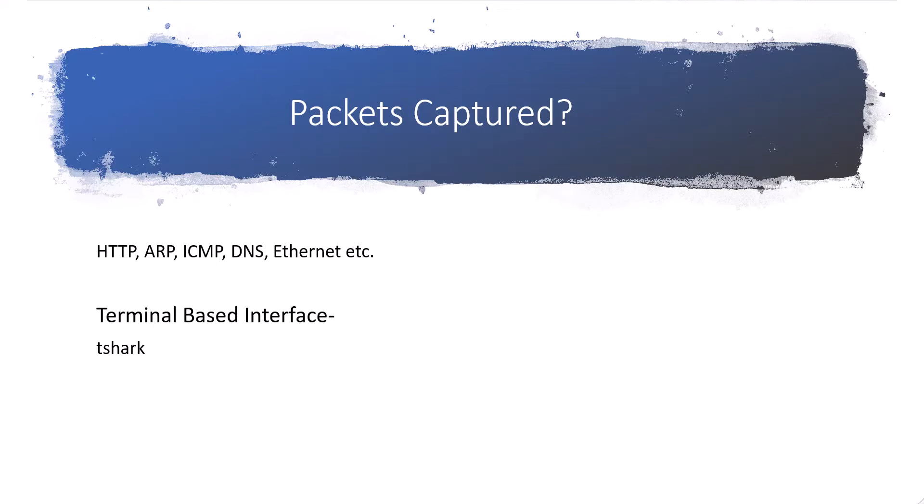So what kind of packets are transmitted in the network? Here you can see there are TCP packets, HTTP, ARP, and ICMP packets. There are a lot of packets that we can capture through Wireshark and analyze.